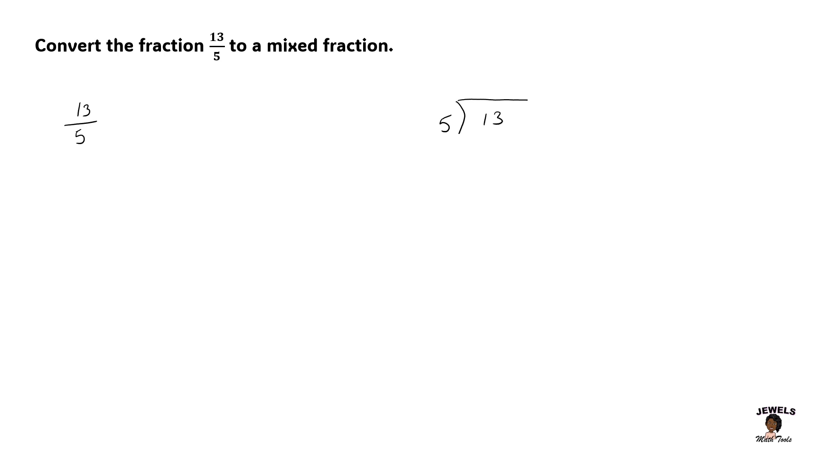Now we know that 5 can't divide into 1 since 1 is less than 5. So we'll be dividing 5 into 13, which will go twice. 2 times 5 is 10. And when 13 minus 10, this will leave us with a difference of 3.